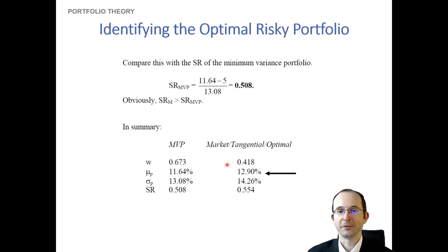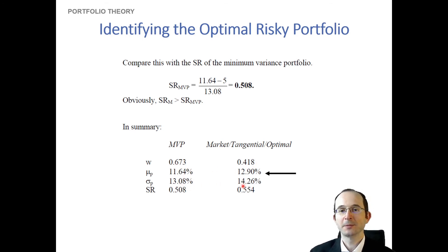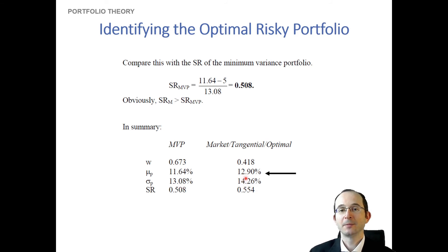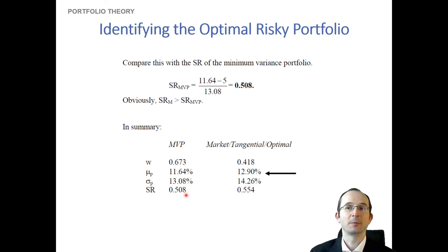Comparing their characteristics: the minimum variance portfolio places more weight on the lower-risk asset, so it has lower portfolio risk. However, the optimal portfolio makes a better risk-return trade-off — especially once we account for the risk-free rate — as evidenced by its higher Sharpe ratio.